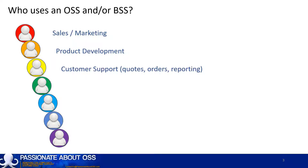Also important are the frontline customer support staff. The OSS and BSS help these people to accept orders, handle customer interactions such as problem resolutions, track the quality of customer experiences and their service level contracts, which are known as SLAs. And through that they also use customer relationship management tools, as well as so much more.